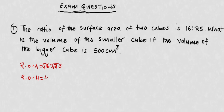Square root of 16 is 4, square root of 25 is 5. The question is asking us to find the volume, so we find the ratio of volumes. To find the ratio of volumes, you use the ratio of heights — the ratio of heights is 4 to 5 — and raise them to the power of 3.